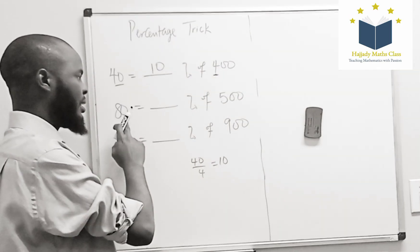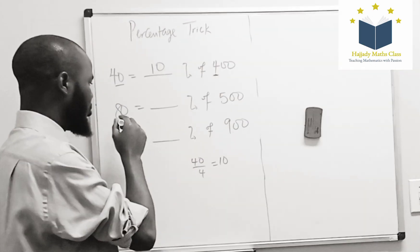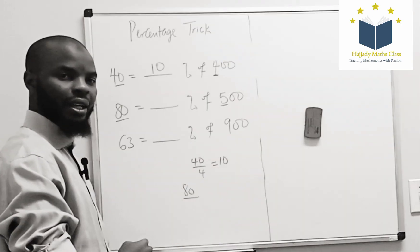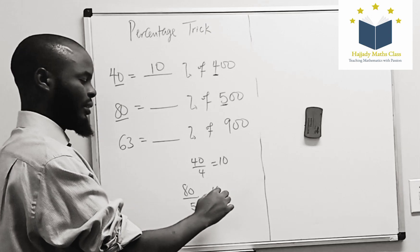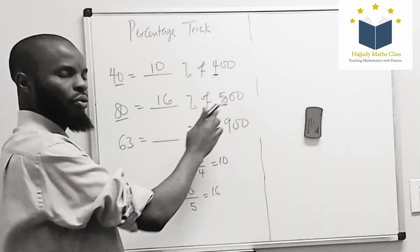Secondly, 80 is what percent of 500? Just pick 80 divided by the first digit which is 5. So here we have 16. So 80 is 16 percent of 500.